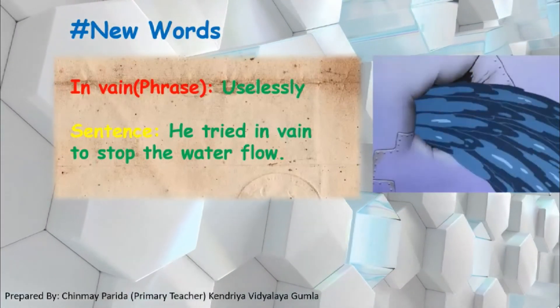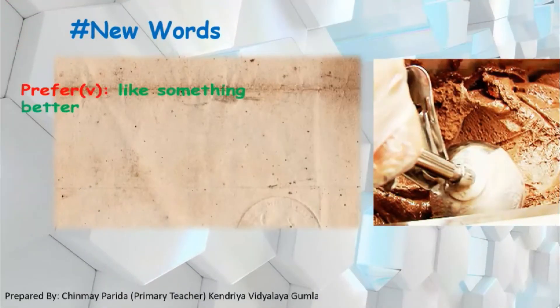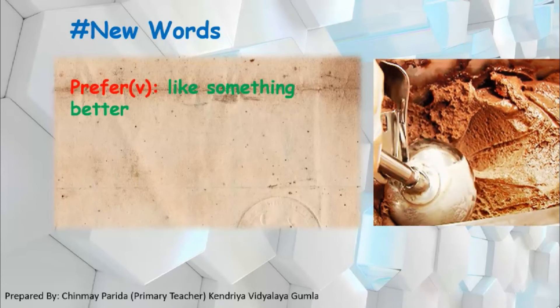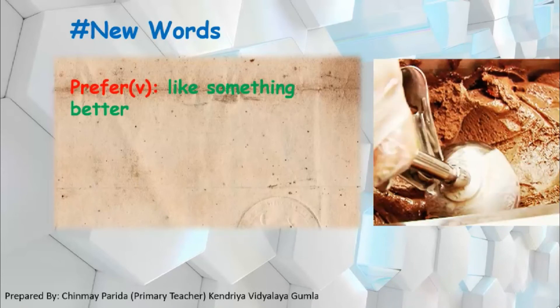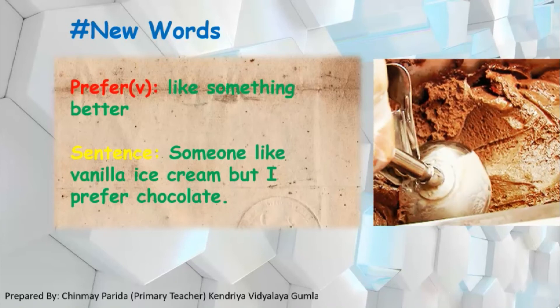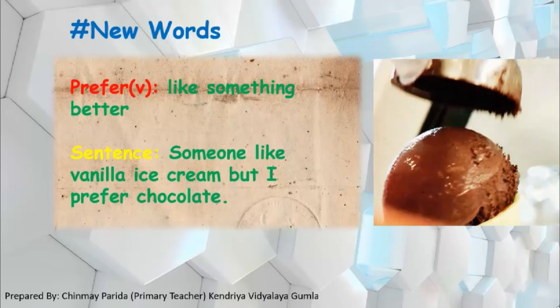The next new word is 'prefer' — P-R-E-F-E-R. It's a verb and it means to like something better. When we compare two things and choose the best, we say we prefer this thing over that thing. For example: 'Someone likes vanilla ice cream, but I prefer chocolate ice cream over vanilla ice cream.'